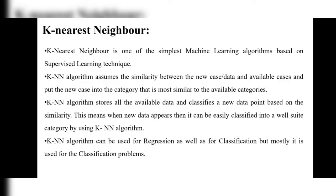KNN puts the new case into the category that is most similar to the available categories. When we have a category similar to the new data, it will add the new data according to that category. KNN stores all the available data and classifies a new data point based on the similarity.